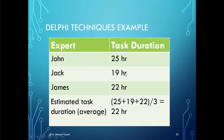This slide shows an example using the Delphi technique. We have three experts — John, Jack, and James — and we have the task duration based on each expert's opinion. To estimate the duration, we calculate the average, which is the sum of all task durations divided by the number of experts, which is three, giving an average of 22 hours.